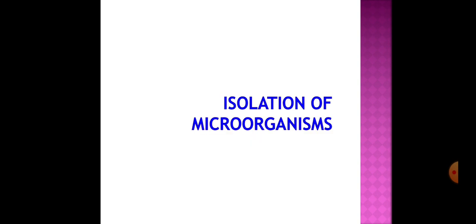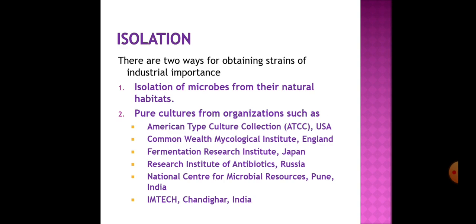The first step is isolation of microorganisms. There are two ways of obtaining strains of industrial importance: isolation of microbes from natural habitat, or obtaining pure cultures from organizations such as the American Type Culture Collection (ATCC) USA, Commonwealth Mycological Institute England, Fermentation Research Institute Japan, Research Institute of Antibiotics Russia. In India, two institutes provide pure cultures: National Center for Microbial Resources, Pune, and IMTECH, Chandigarh.